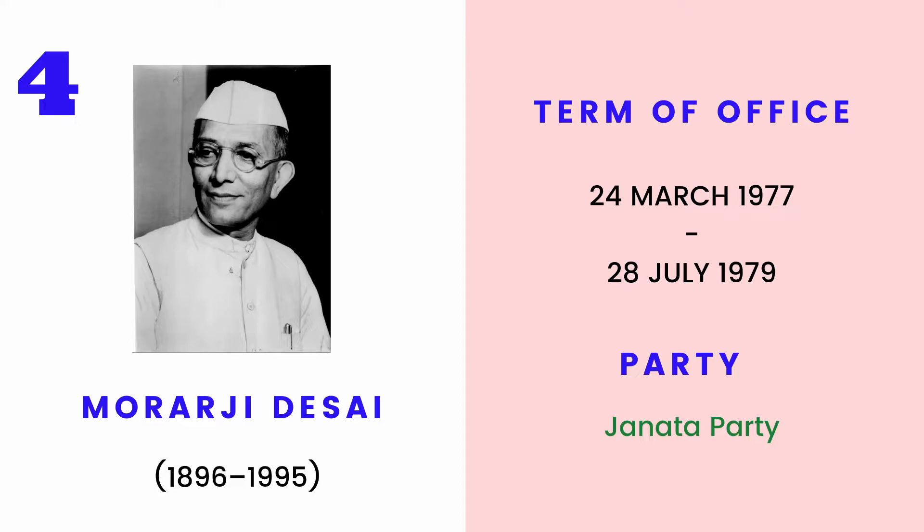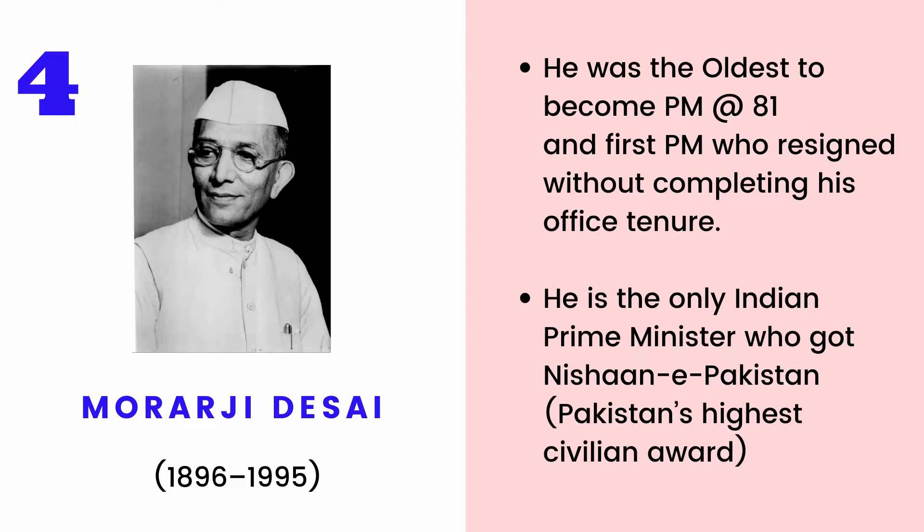Morarji Desai served as the fourth Prime Minister of India from 1977 to 1979. He is the oldest person to hold the office of Prime Minister, at the age of 81. He is the only Indian Prime Minister to receive the Nishan-e-Pakistan, Pakistan's highest civilian award.